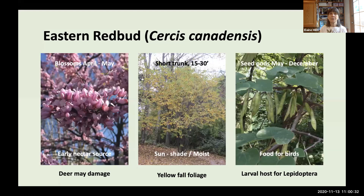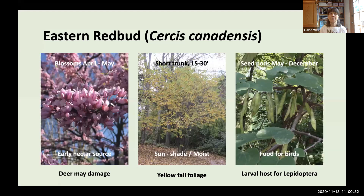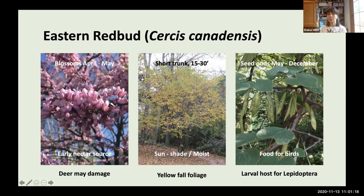Eastern Redbud, Cercis canadensis, has a short trunk and round crown growing 15 to 30 feet tall. I think of it as an understory tree. It has blossoms in April to May — many growing directly from branches and even the trunk itself — as an important early nectar source. It has attractive yellow fall foliage and develops seed pods that serve as food for birds, with leaves serving as a larval host for Lepidoptera. Note: deer may damage the young shoots.